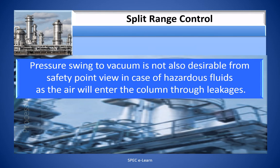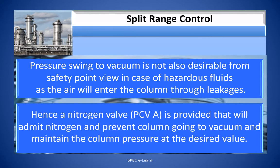Pressure swing to vacuum is not desirable from a safety point of view in case of hazardous fluids, as air will enter the column through leakages. Hence, nitrogen valve PCVA is provided to admit nitrogen and prevent the column from going into vacuum, maintaining the column pressure at the desired value.